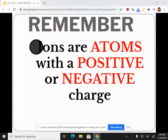We're talking about ionic bonds. Ions are atoms with a positive or negative charge. We create ions by either losing or gaining electrons. This is also called reduction plus oxidation.